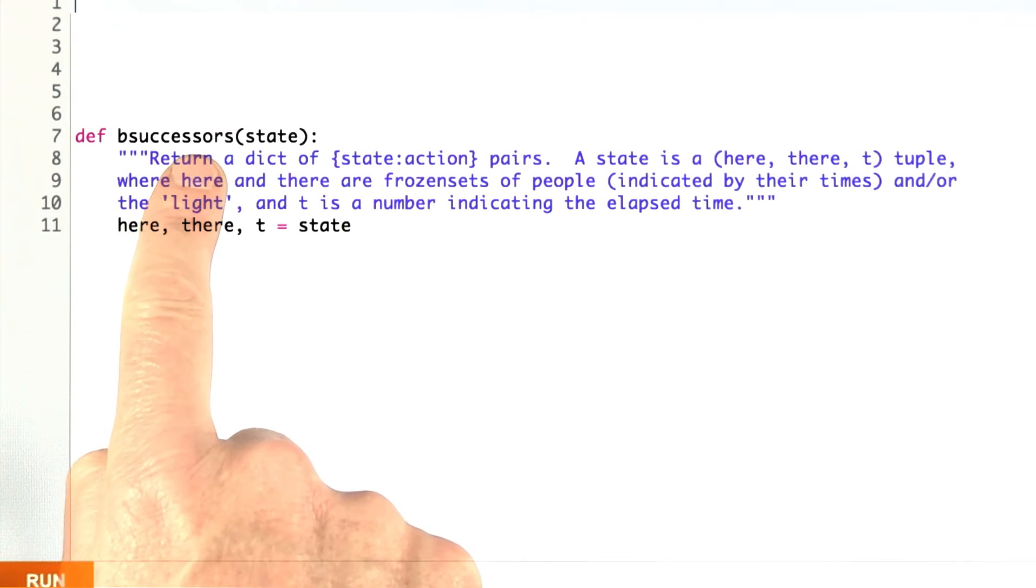What I want you to do is write for me the successor function. We're calling it B successors because we already had A and we're on to B, or B could stand for bridge. Remember that a result of the successor function is a dictionary of state action pairs. A state is this here, there, t tuple. Here and there have to be frozen sets.